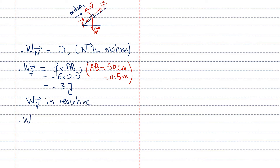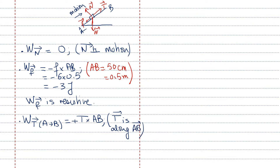Third, the work of tension from A to B: since displacement A to B is upward and tension is pulling upward, it's plus T times AB, as T is along AB. So the work of tension equals plus 20 times 0.5, which is plus 10 joules. This is positive — it is motive.